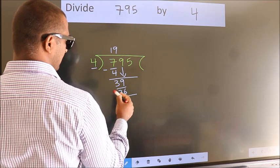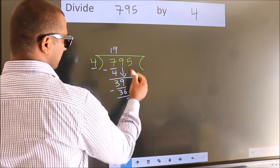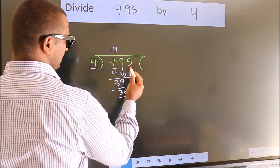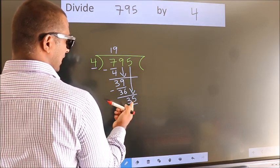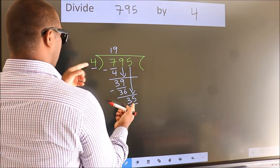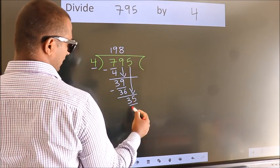Now, we subtract. We get 3. After this, bring down the beside number. So, 5 down. So, 35. A number close to 35 in 4 table is 4 8s 32.